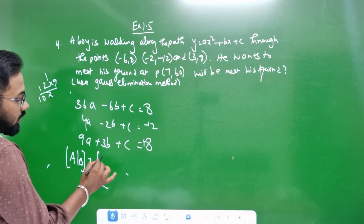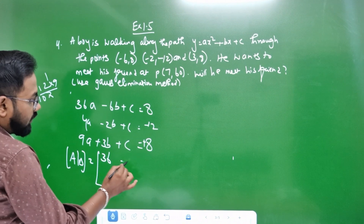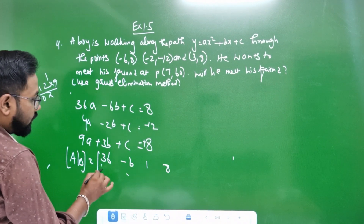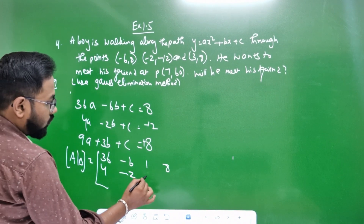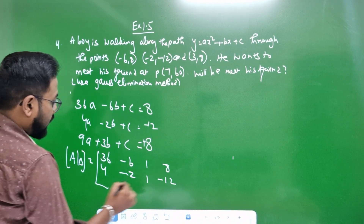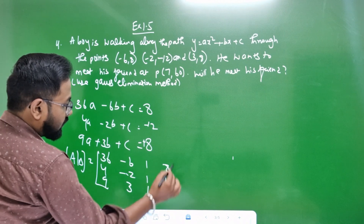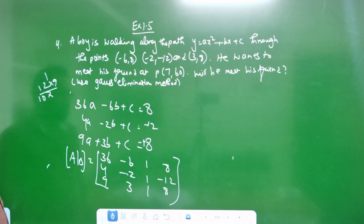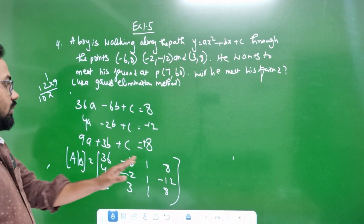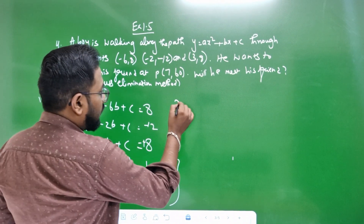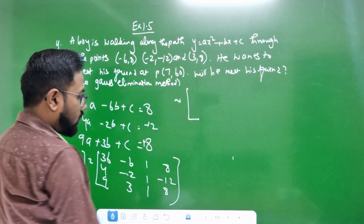So, this is 36 minus 6, 1, 8. That is 4 minus 2, 1 minus 12. That is 9, 3, 1, 8. Let's go back to this. We can do this. This is not a rank method. Let's go back to rank method. It's not a gas emission method. 96 minus 6 is 18.